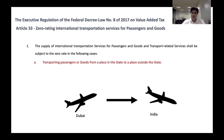The first point talks about transporting passengers or goods from a place in the state to a place outside the state. A simple example: a flight from Dubai to India — inside the state means UAE, outside the state means anywhere outside UAE. It is considered zero rated because it's part of international transportation. This applies to flights, ships, or road transport moving from UAE to, say, any Middle East country.